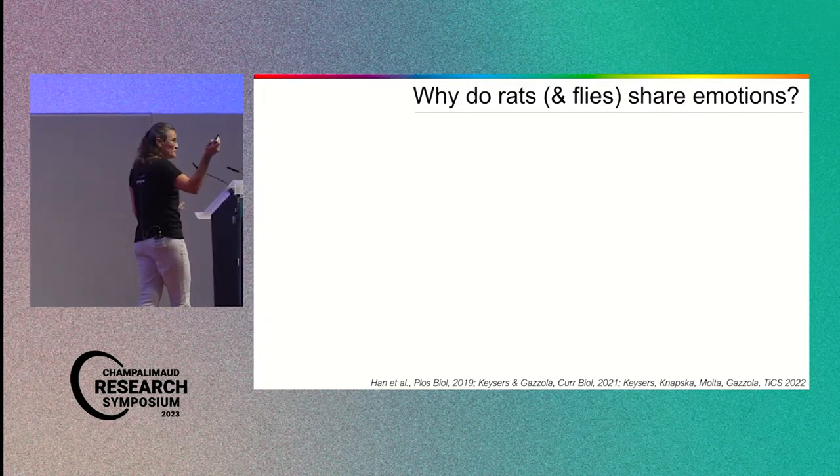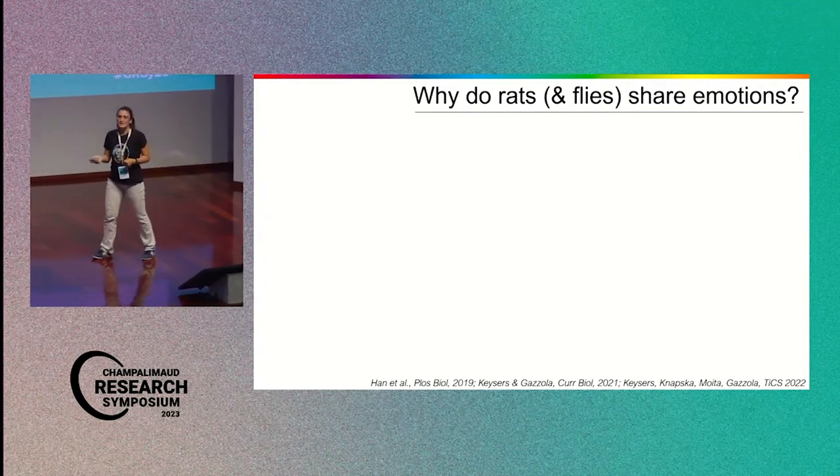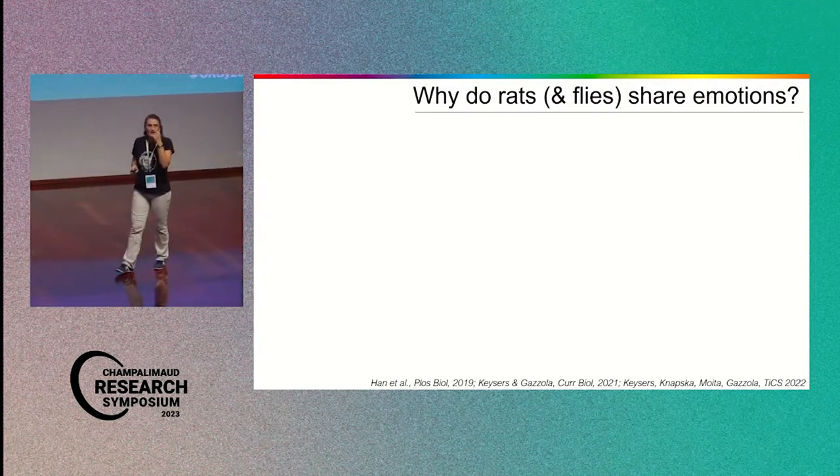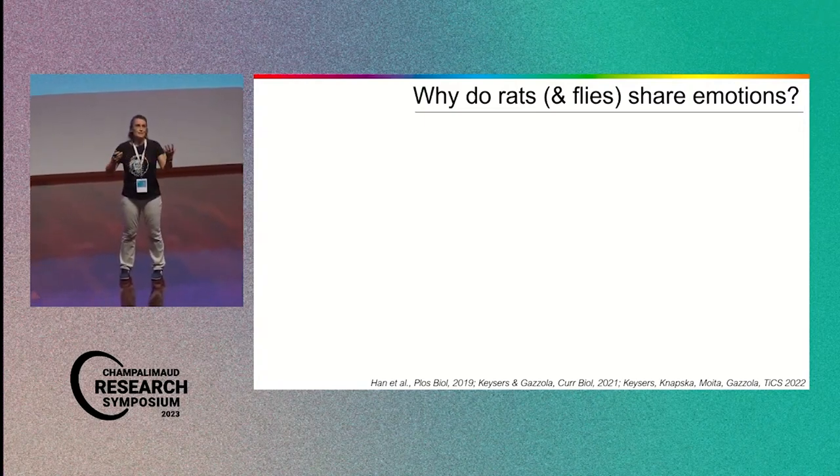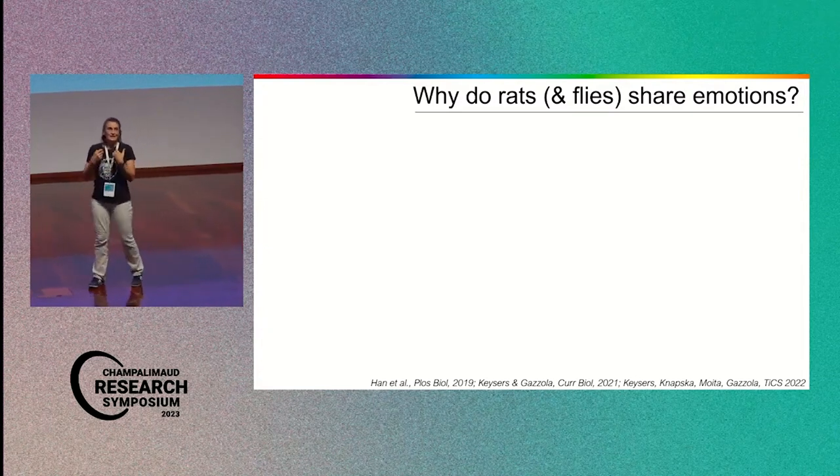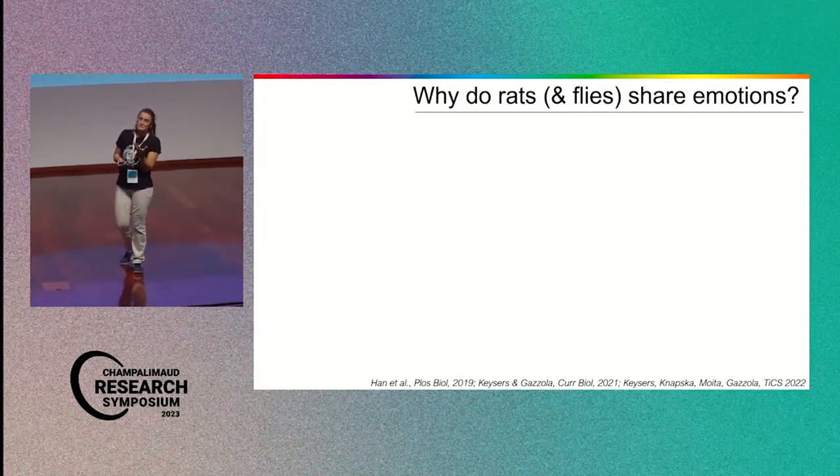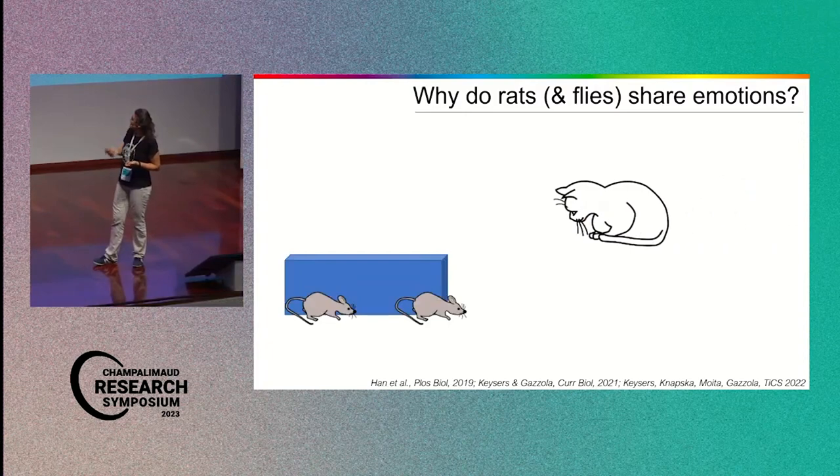So why rats and flies share emotions? Because we know from the work of many of you, they react to the emotional state, share the emotional state of others. So together with Marta and Evelina Knapska as well, we are proposing... In humans, the classical theory is that empathy evolved mainly based on the motherhood and the kinship. And here we wanted to propose something different, and I think it makes sense for many of you as well.